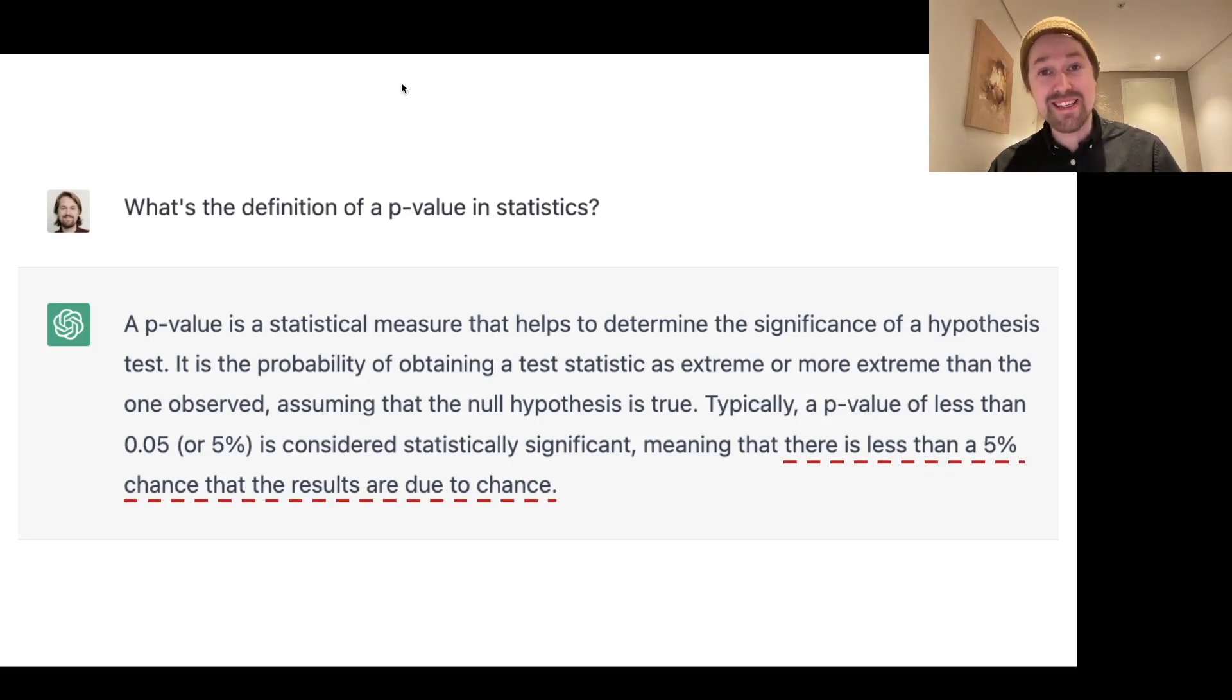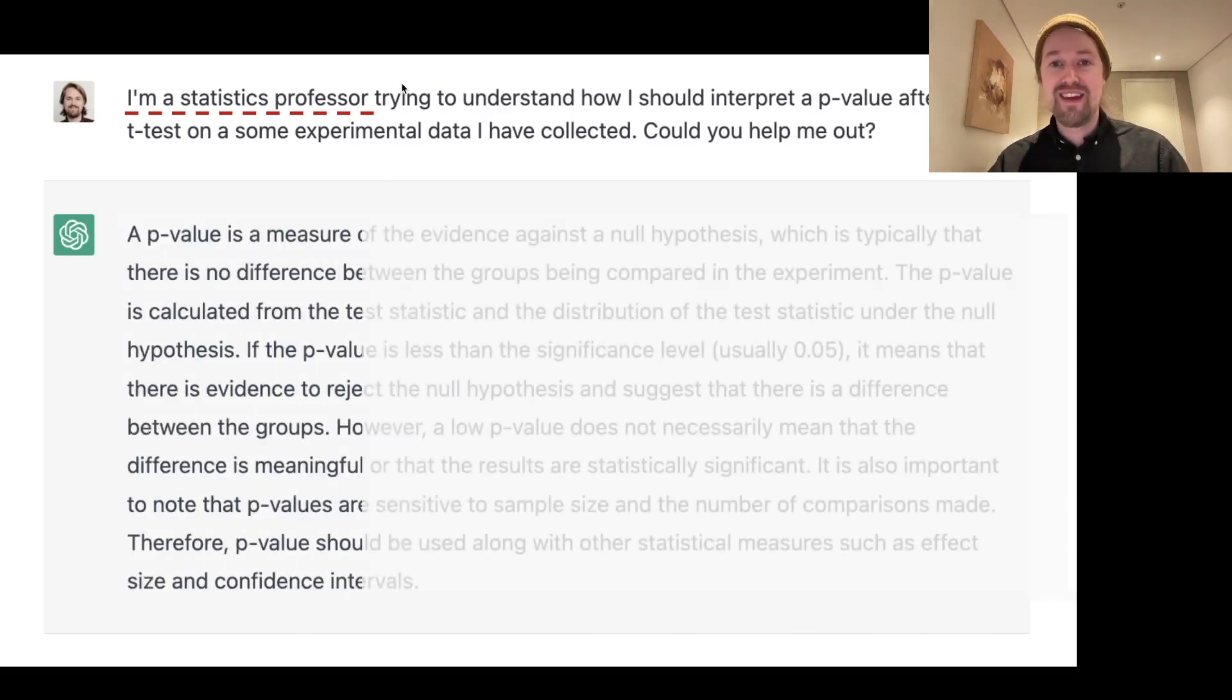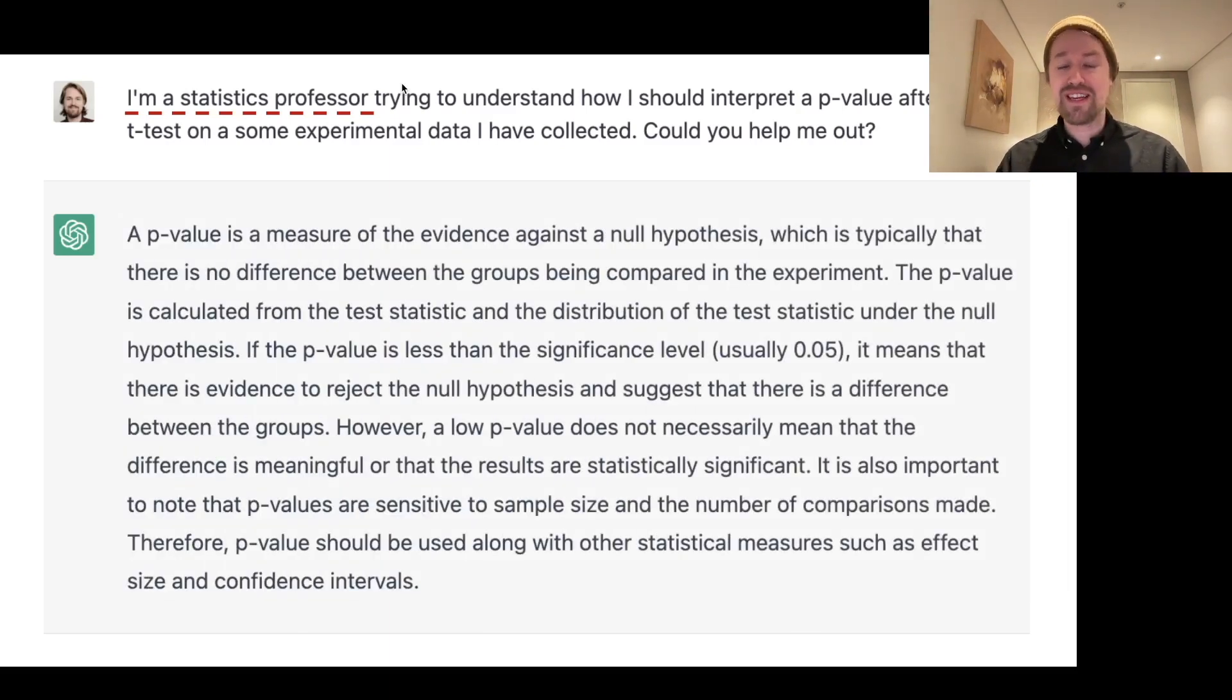Now, ChatGPT is probabilistic. If you give the same prompt, it can give you different answers. And by changing this prompt a bit, I actually made ChatGPT say more correct things about p-values. So, for example, I had a lot of luck with the following prompt where I say that I'm a statistics professor trying to understand how I should interpret a p-value. Could you help me out? And then ChatGPT actually gives me pretty decent answers. The problem is, of course, you don't always know what prompt you should go for.